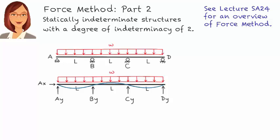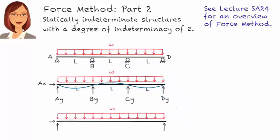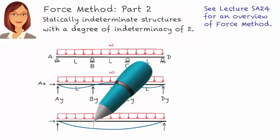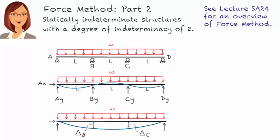Since the degree of indeterminacy of the beam is 2, if we remove two of the vertical reactions, we get a statically determinate beam. Let's pick B-Y and C-Y as the redundant forces. If we remove them from the free body diagram, since points B and C are no longer restrained against vertical movement, the beam is going to deflect downward. Let's refer to the vertical displacement at B as delta B, and call the displacement at C delta C.